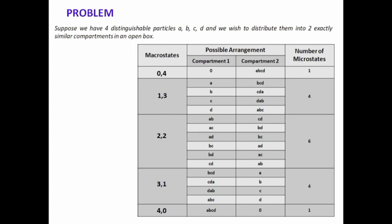The other possibility is (3, 1) — the opposite of (1, 3) — meaning three particles can be in compartment 1 and one particle in compartment 2. The total number of microstates corresponding to the (3, 1) macrostate will be 4. And the last possibility is (4, 0): four particles in compartment 1 and zero in compartment 2. So in this problem, the total number of macrostates is 5 and the total number of microstates is 16.